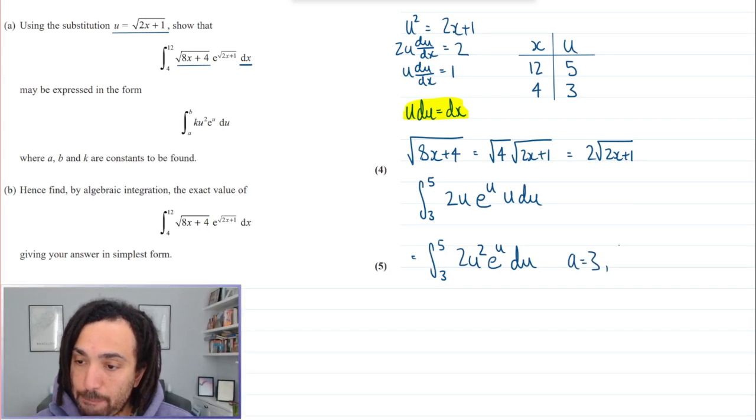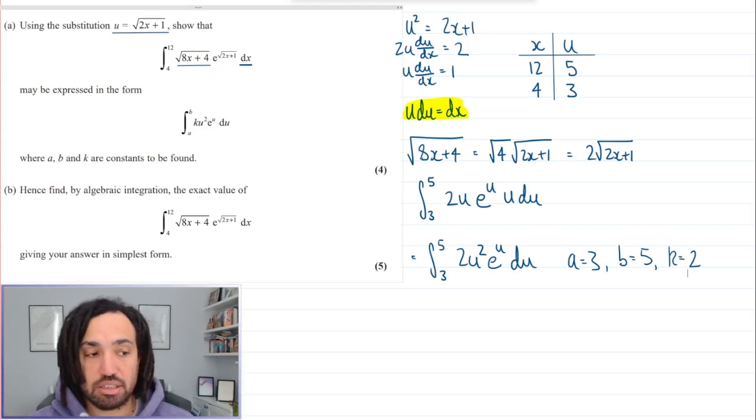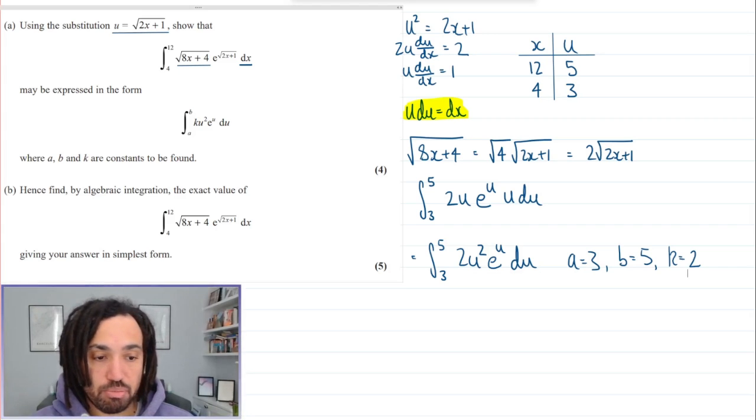Great, so tidying this up we have 2u squared e to the u du. So we know that a is 3, b is 5 and k is 2. Great, just going to grab some more space and then we'll do part b.